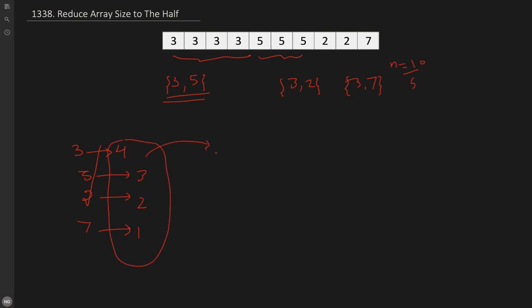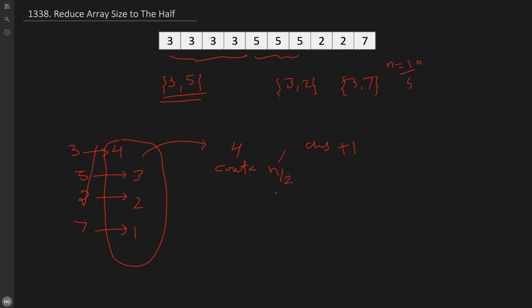Once we build the max heap, we poll elements from it — first we get 4. We keep adding the polled value into a variable `count`, and we also maintain an `answer` variable that increments by 1 each time we pick from the heap. We check every time if `count` has crossed half the array size. We run while `count` is less than n/2. Count starts at 0, becomes 4, still less than 5, then we add 3 so it becomes 7 and we stop. The answer updates from 0 to 1 to 2, so 2 is the answer.